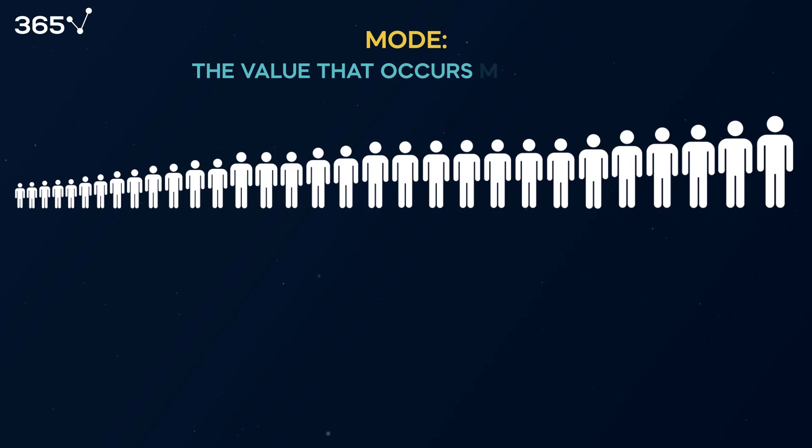The mode is the value that occurs most often for numerical and categorical data. Only one height is observed more than two times, 172. Therefore, this is the mode of our sample.